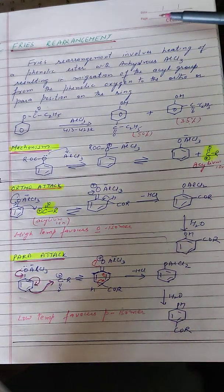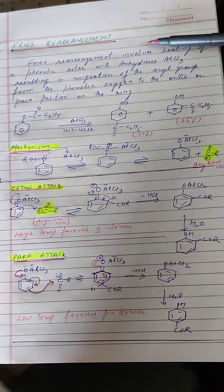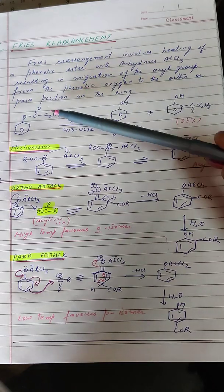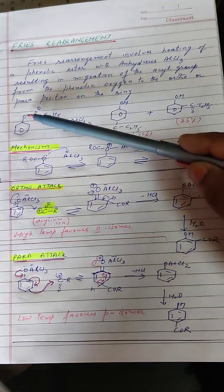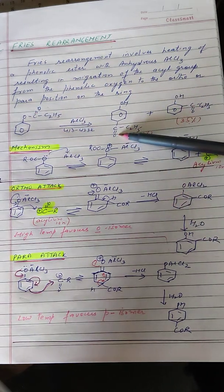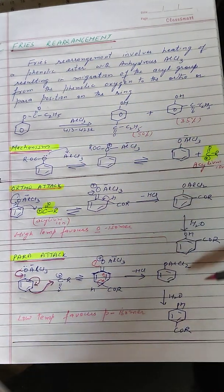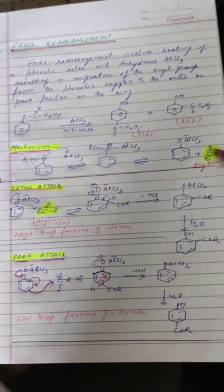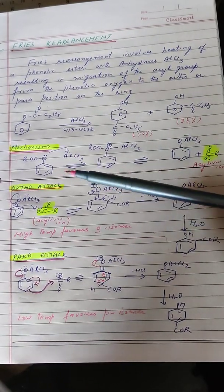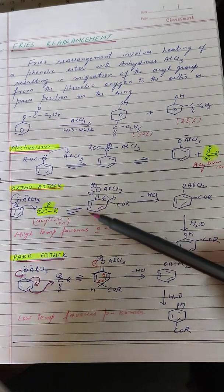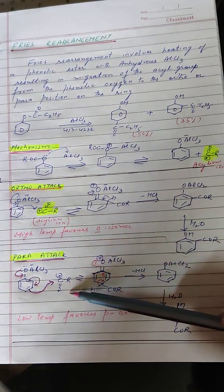Next we have Fries rearrangement. Fries rearrangement involves heating a phenolic ester with anhydrous aluminium chloride, resulting in the migration of the acyl group from the phenolic oxygen to the ortho or para position. The first step of the mechanism involves the formation of an acylium ion by the attack of the phenol ester with aluminium chloride.